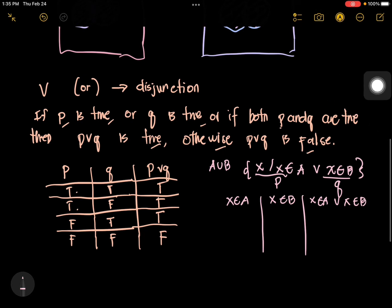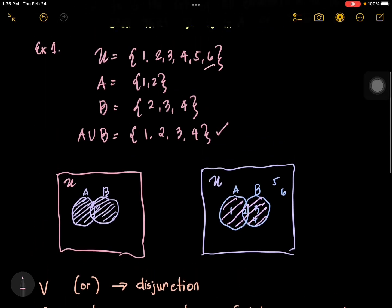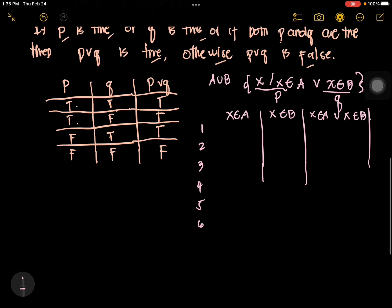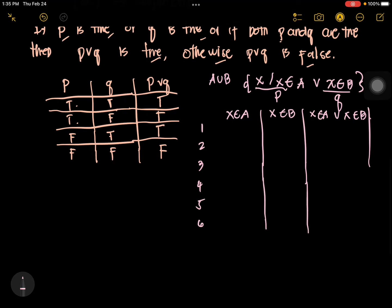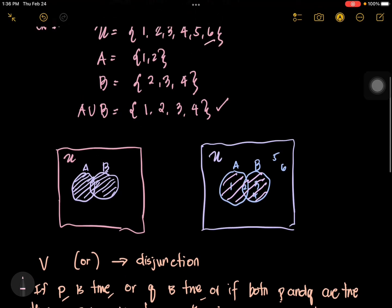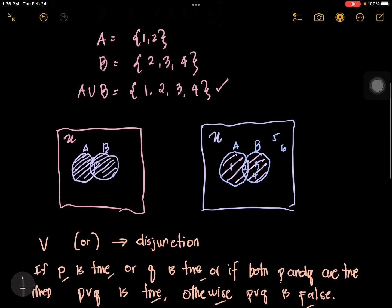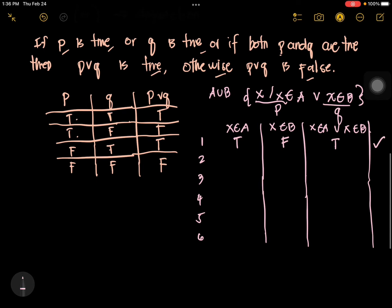We have the universal set 1 to 6. We will test each element using the propositions and the disjunction. Element 1 is in A, so that's true; not in B, so false — result is true, meaning it is included in the union. Element 2 is in both A and B, so true and true — included. Element 3 is not in A (false) but is in B (true) — result is true, so included. Element 4 is not in A (false) but in B (true) — result is true, included.